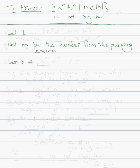And then we say by the pumping lemma, s equals x, y, z, where y is not lambda — y cannot be the empty string — and also the length of the x, y part has to be less than or equal to m. And that's just what the pumping lemma says.